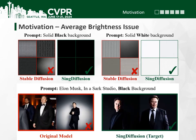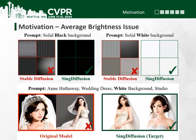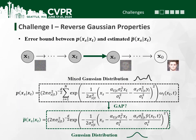However, the singularities in diffusion models are hard to tackle. It has two challenges. First, most diffusion models assume that the reverse process adheres to a Gaussian distribution. However, this approximation has not been rigorously validated, especially at the singularities where t equals 0 and 1. Therefore, it is not easy to use the sampling functions with Gaussian approximation at the singular time steps.